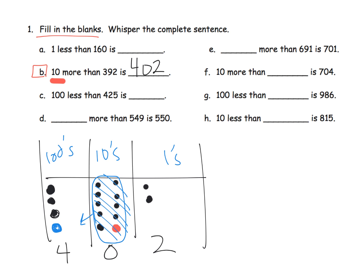Parents and teachers, ideally students should solve these in their head or using logic, but for differentiation purposes feel free to give students place value discs or extra paper so they can draw representations. Let's look at problem h: 10 less than 815 means we take away one from the tens column, giving us 805.